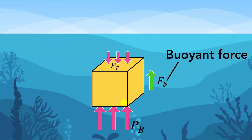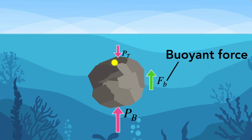That net upward force is what we call the buoyant force — the force that tends to make things float, tends to make things buoyant. The buoyant force ultimately comes from the fact that as you go deeper, the pressure increases. Although we did this analysis for a cube, this would be true for any object of any arbitrary shape. Even if you take a rock with some random shape, the pressure from the top is smaller than the pressure from the bottom, so there will always be a net force acting upward — the buoyant force.